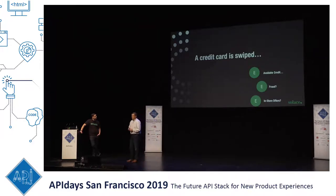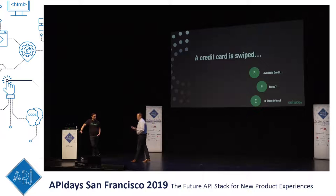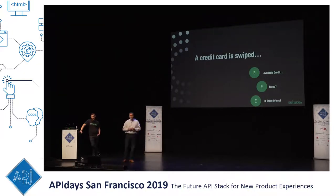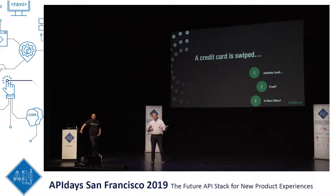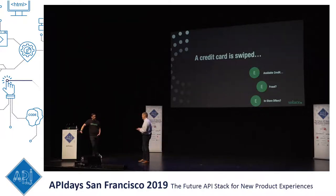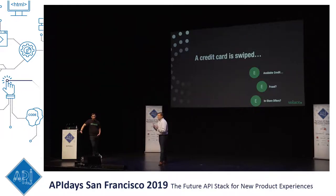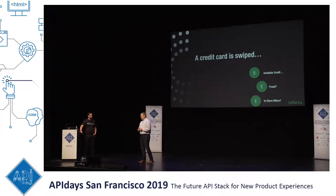The very first thing a business might do with a credit card swipe event is check whether you have available credit. But that event means a lot more. Everyone is doing fraud detection in real time to get the answer back. Some customers are doing in-store offers — one big bank has a partnership with Best Buy where, when you swipe and have points available, you can actually pay for that purchase with points instead of credit.